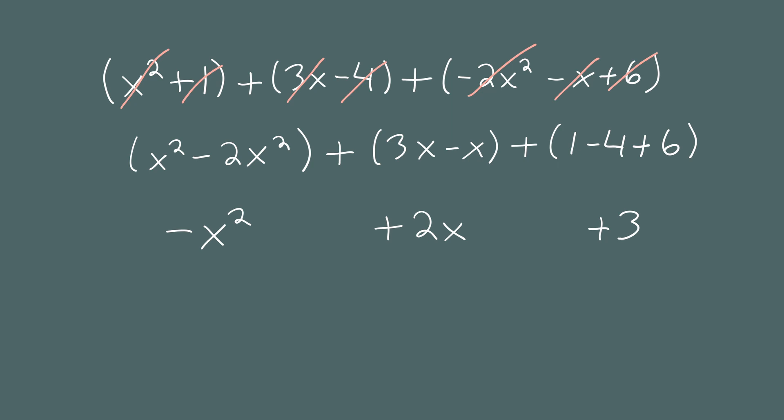So after combining like terms, we get the sum of these three polynomials. Negative x squared plus 2x plus 3.